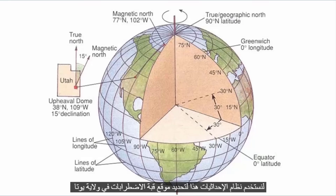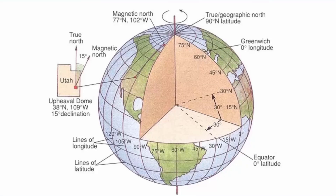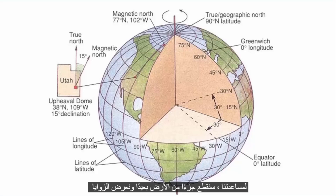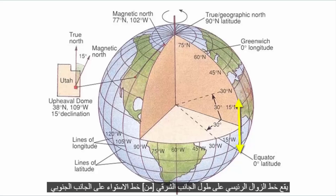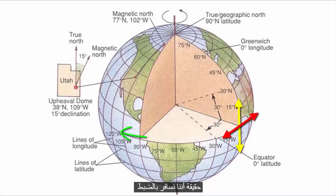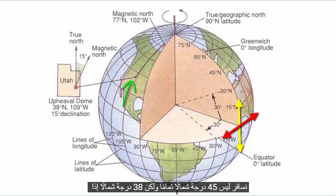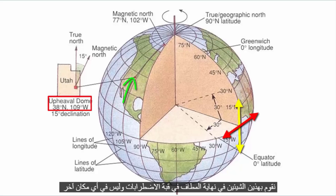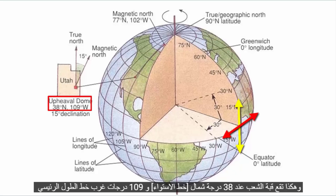Let's use this coordinate system to determine the location of Upheaval Dome in Utah. To help us, we'll cut a section of the earth away and show angles. The prime meridian lies along the eastern side of our cut, and the equator the southern side. Starting at the prime meridian, we have to travel more than one-quarter of a circle west to get to Utah — exactly 109 degrees west. And from the equator, we travel not quite 45 degrees north, but 38 degrees north. If we do both of those things, we end up at Upheaval Dome and nowhere else. Thus, Upheaval Dome is located at 38 degrees north of the equator and 109 degrees west of the prime meridian.